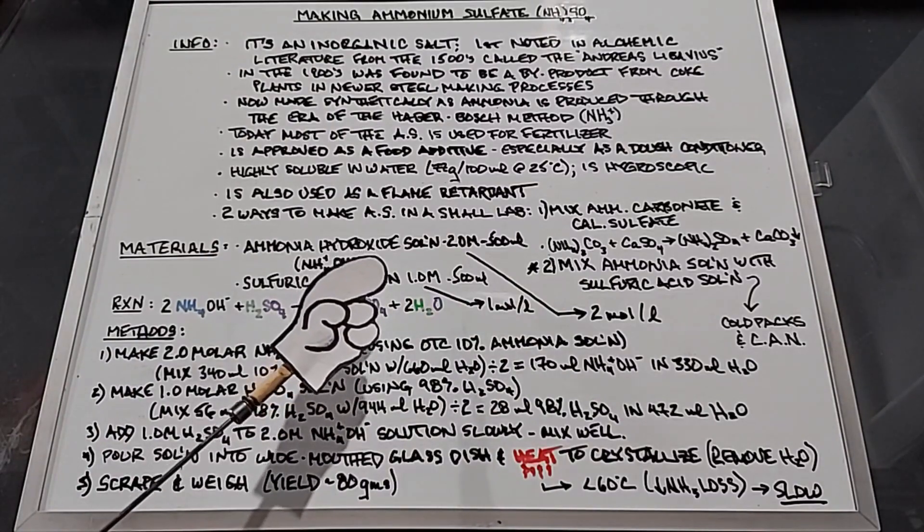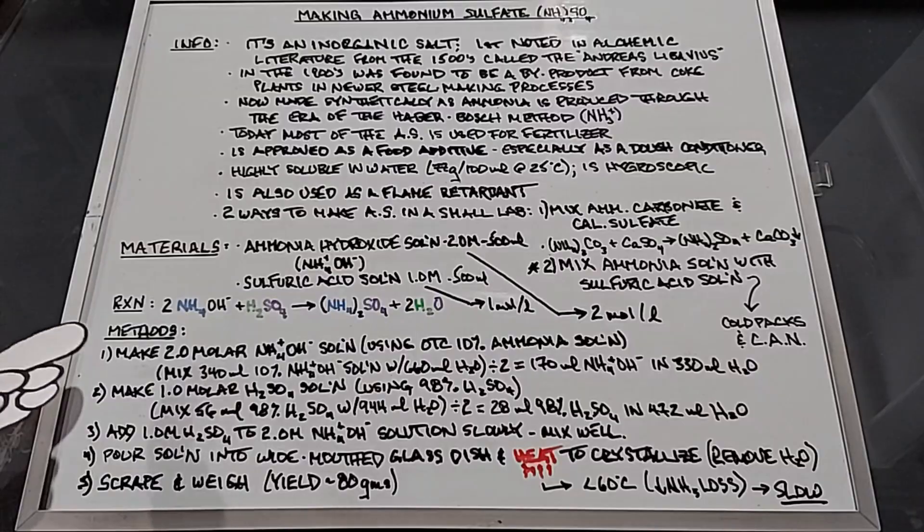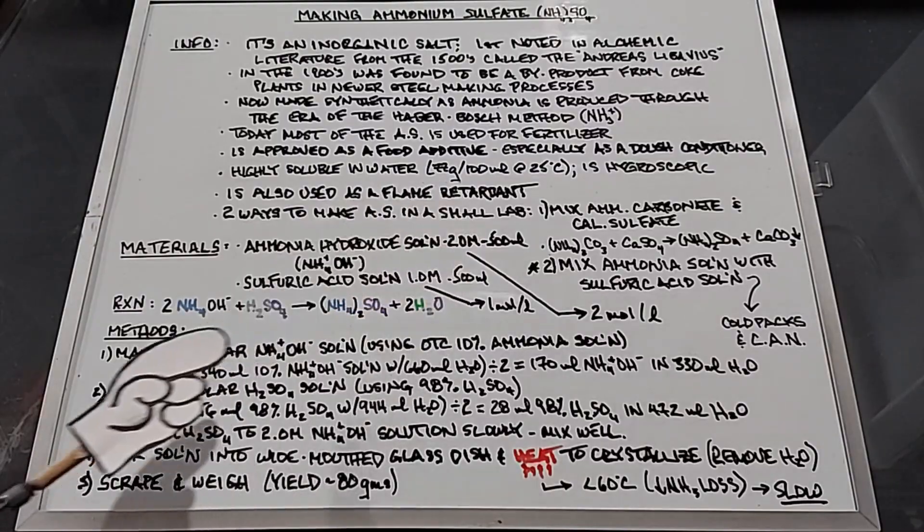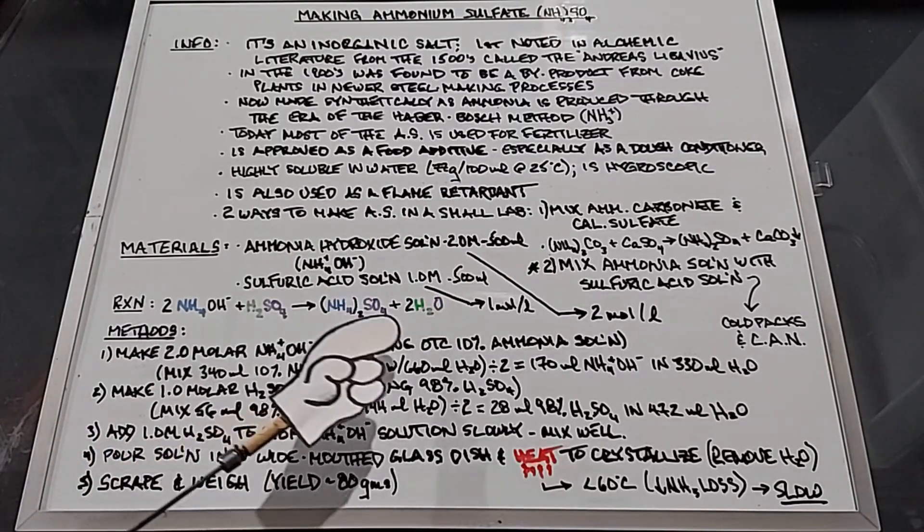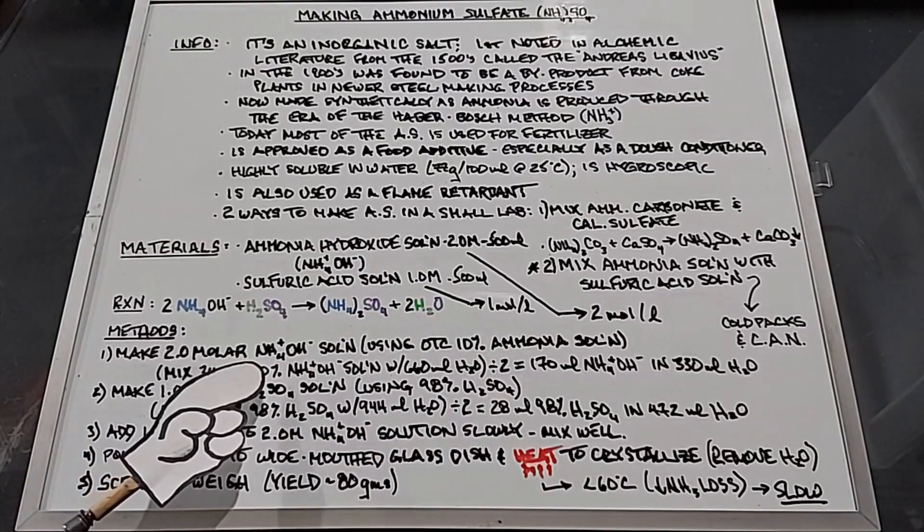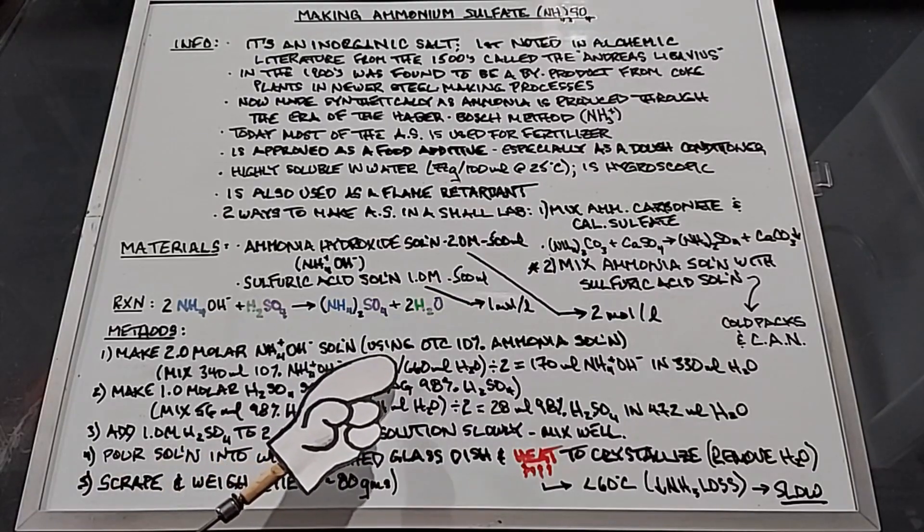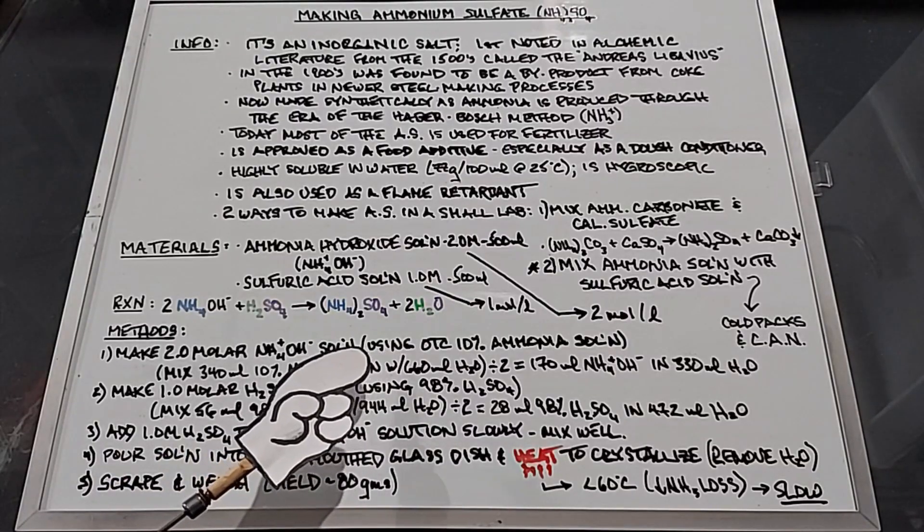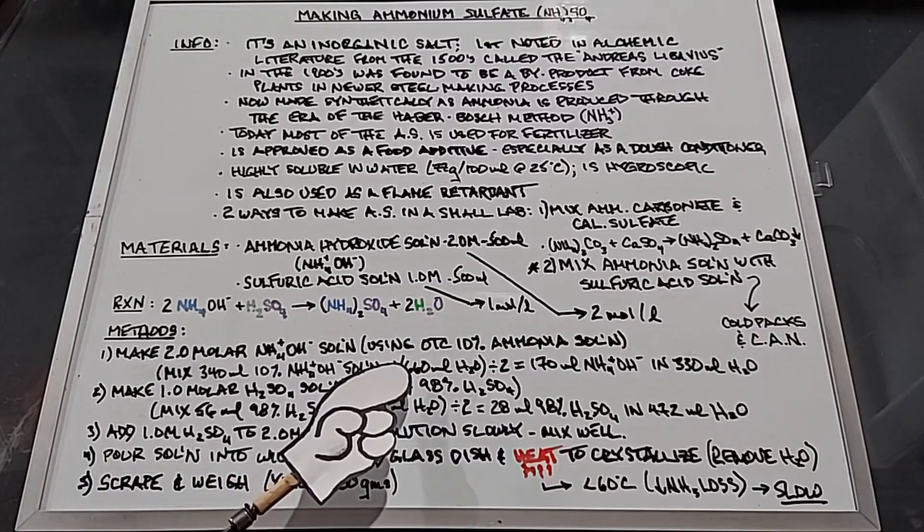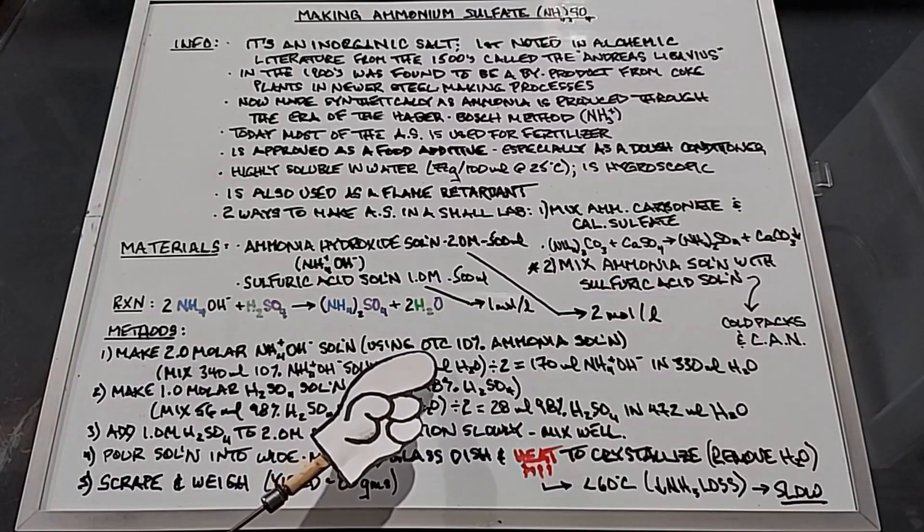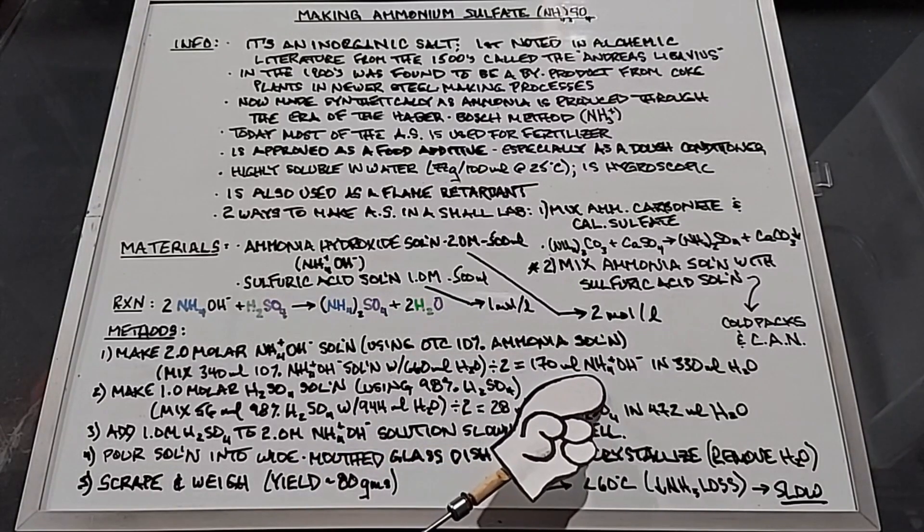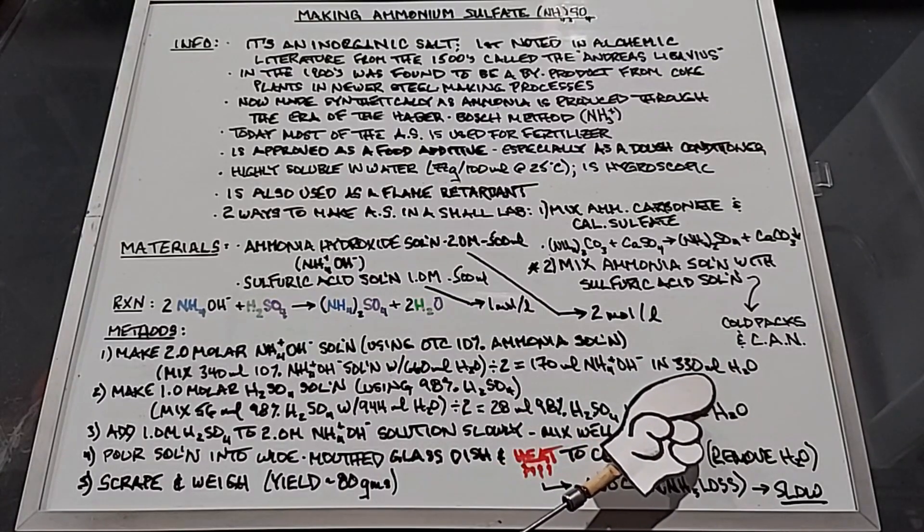In our methods here we're going to make a two molar ammonia hydroxide solution. To make this I'm using over the counter 10% ammonia solution. We want to mix 340 milliliters of a 10% ammonia solution with 660 milliliters of water. Because I only want to do 500 milliliters, I'm going to divide it by two, so we need 170 milliliters of the 10% solution mixed with 330 milliliters of water.